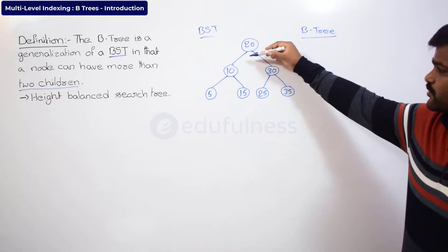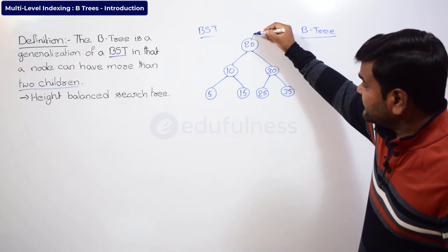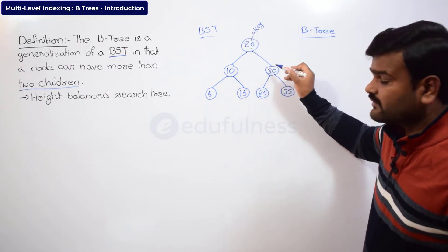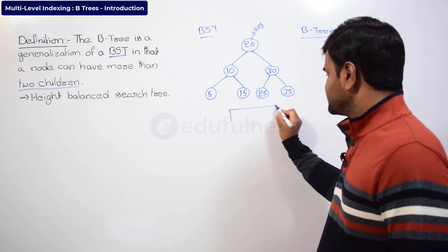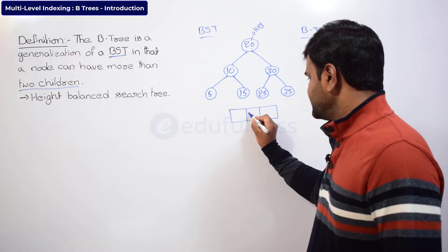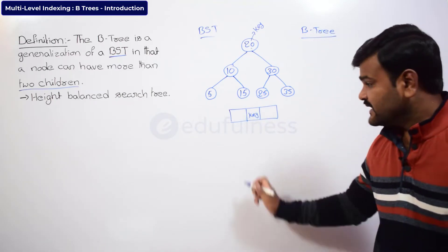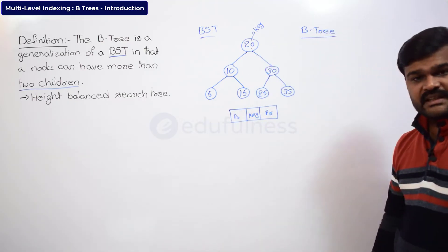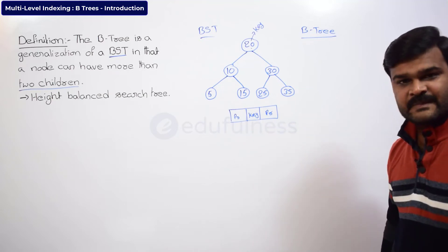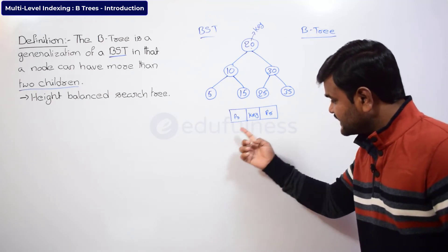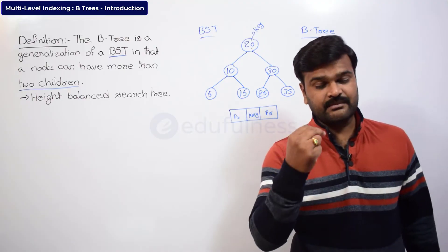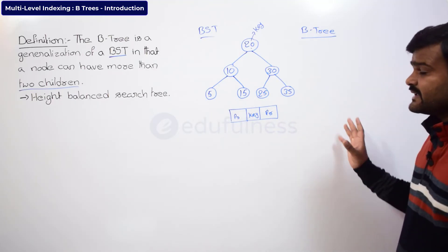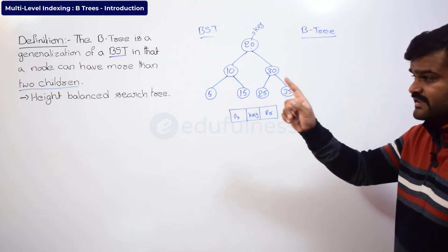In a binary search tree, at most two children are possible — one key has one pointer before and one pointer after, giving two pointers per key. That corresponds to left and right children, so a maximum of two children. In a B-tree, the only real difference is that more than two children are possible.